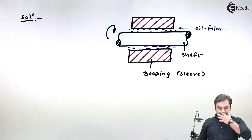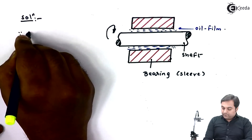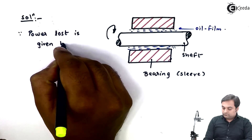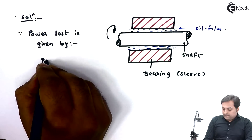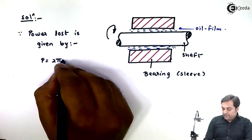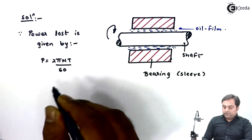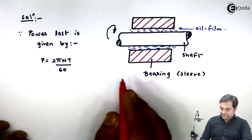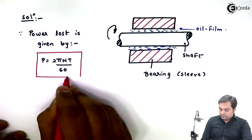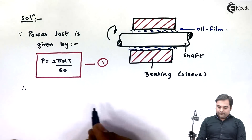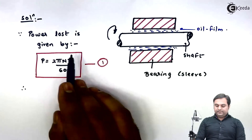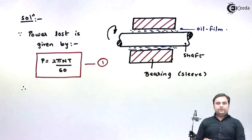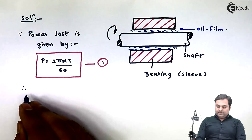In order to calculate power lost, the formula for power is P equals 2 pi N T divided by 60. I'll keep this as equation number one. Therefore, if we are able to calculate torque, this problem is solved. To find torque, I will first find the peripheral velocity of the shaft.